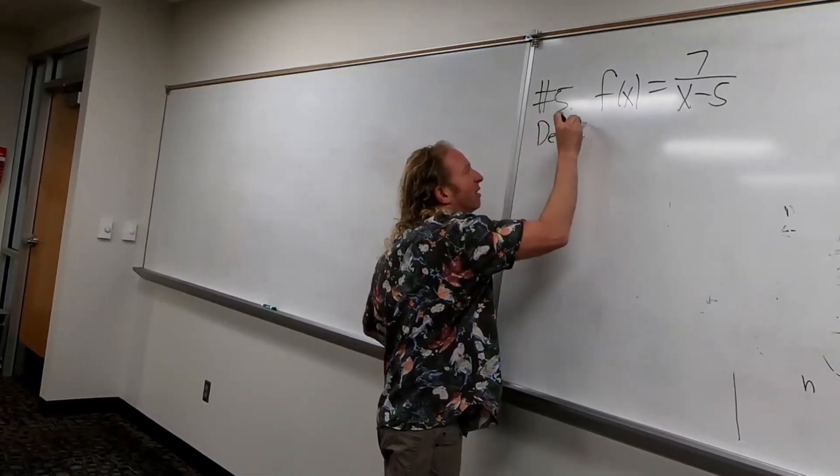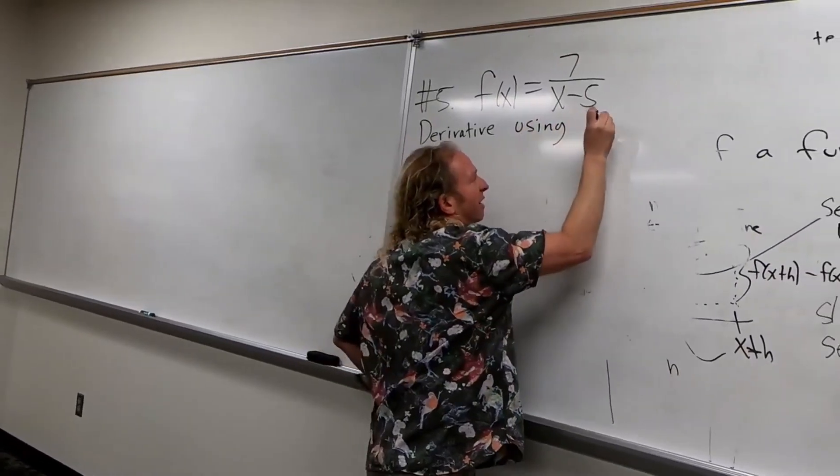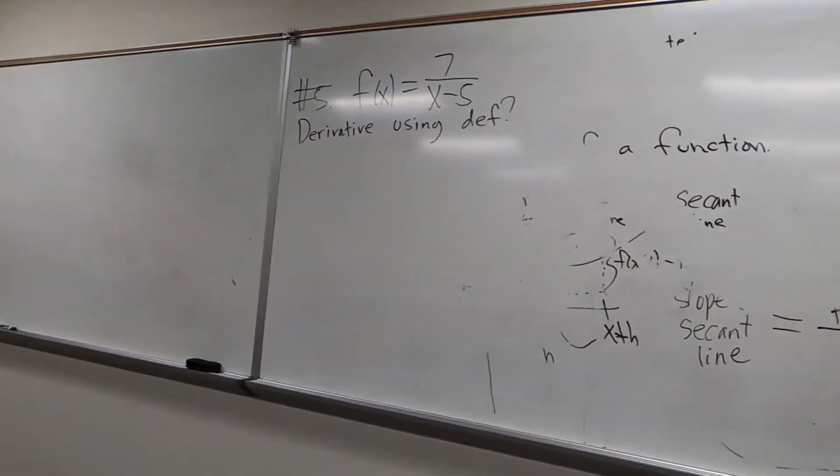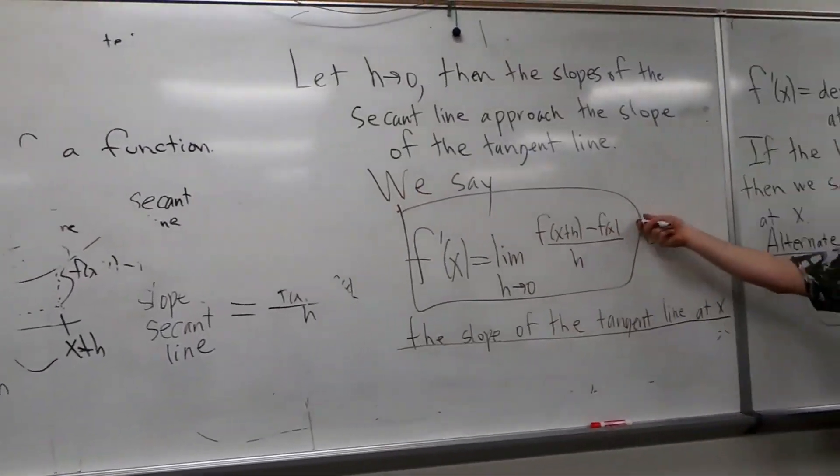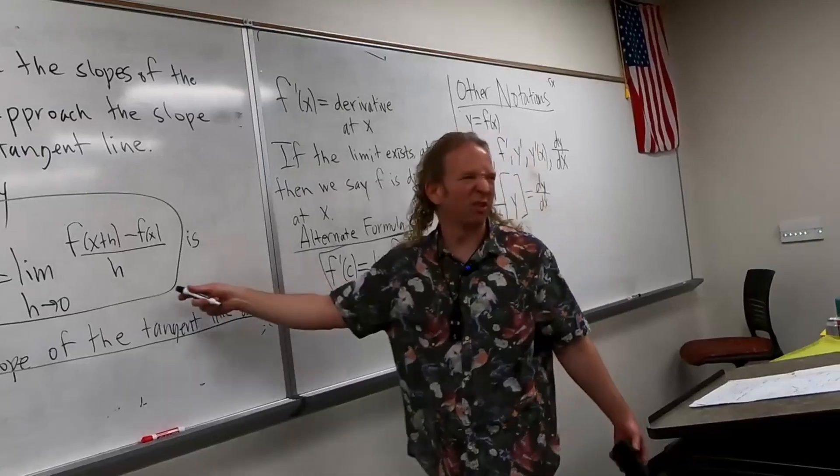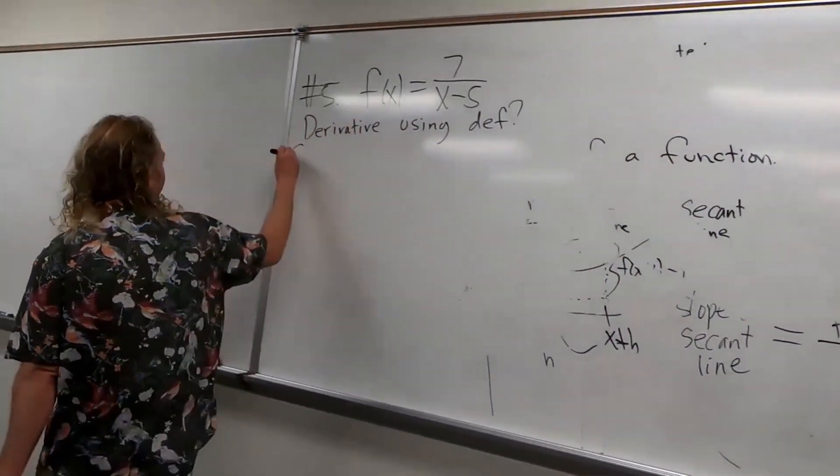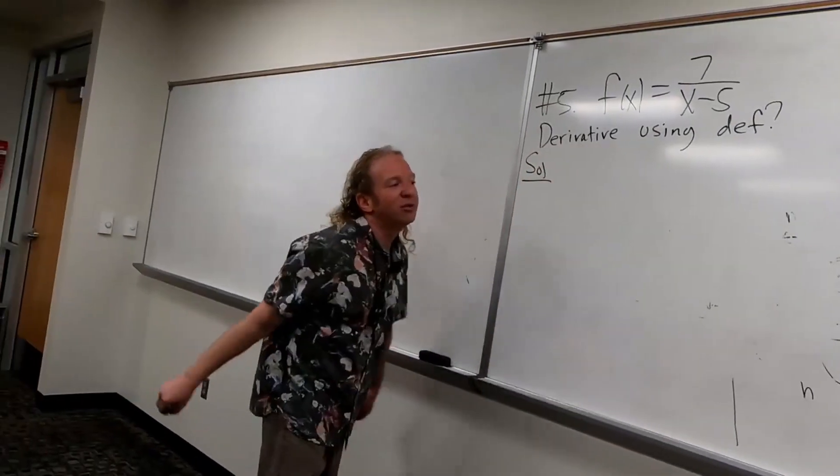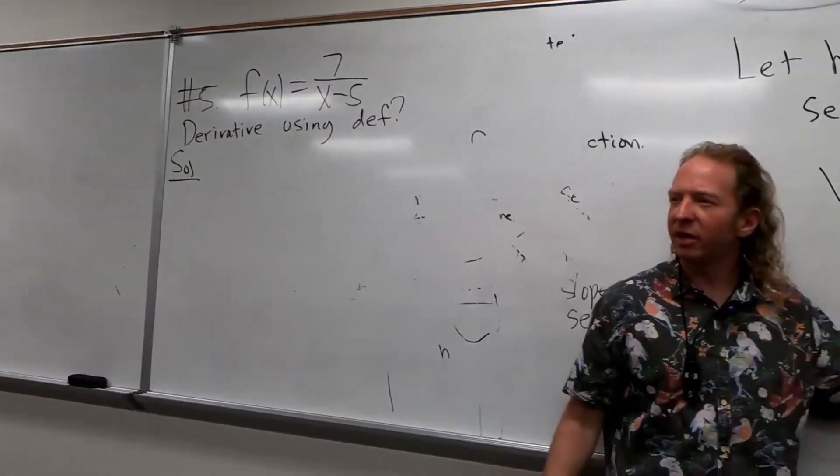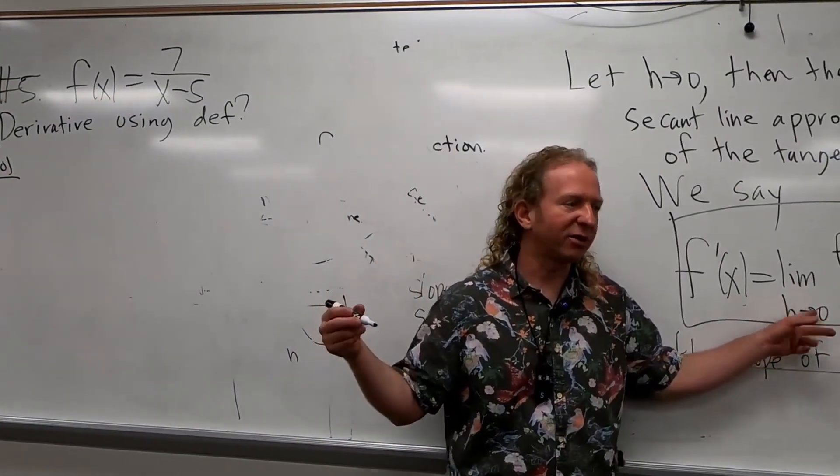Derivative using definition. So that means use this. You can use this one too, but I like to use this one. It's usually easier. All right, so solution. The goal is to just use this formula. Whenever you take a limit and you write the limit sign, you have to keep writing it every single time. What I like to do is not write the limit sign.